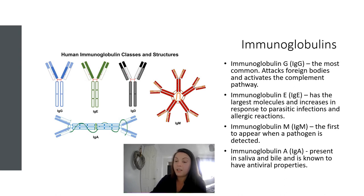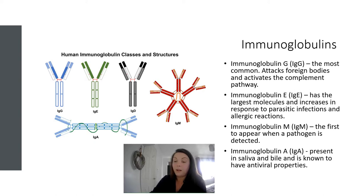Immunoglobulins have many functions including recruitment of immune cells, neutralisation of toxins and removal of antigens. The chains of the immunoglobulin are arranged in a Y shape and the smallest chains have the ability to bind to the antigens. The immunoglobulin is named after the type of heavy chain it has. The common variations of immunoglobulins are shown on the slide here. IgG is the most common immunoglobulin and is the only immunoglobulin that can pass from mother to baby via the umbilical cord and placenta to pass on some protection.